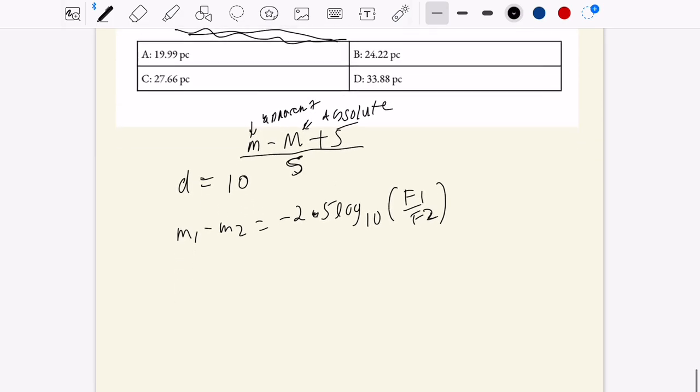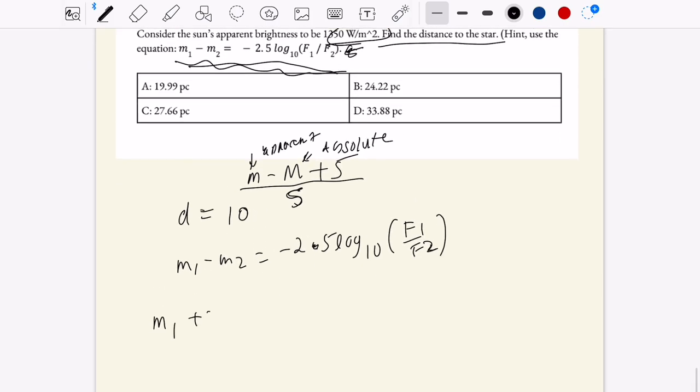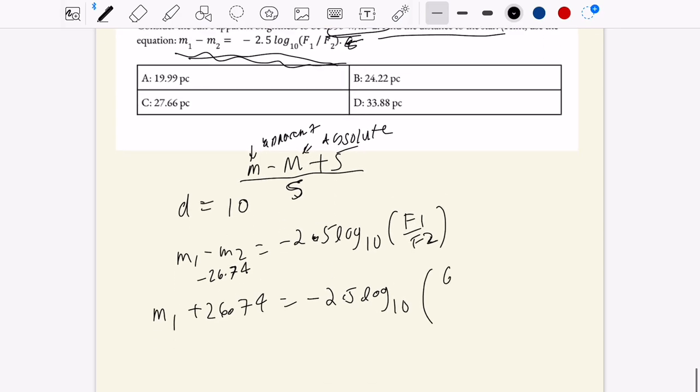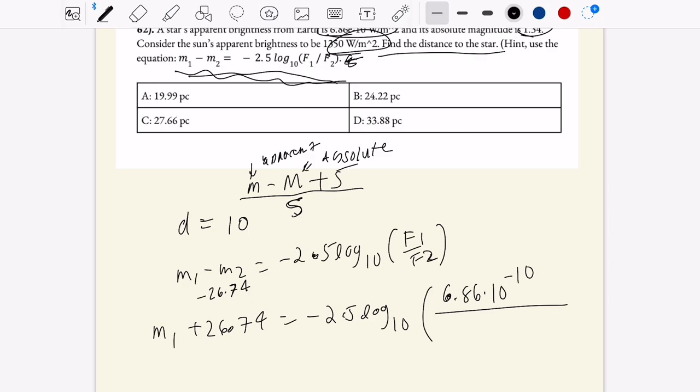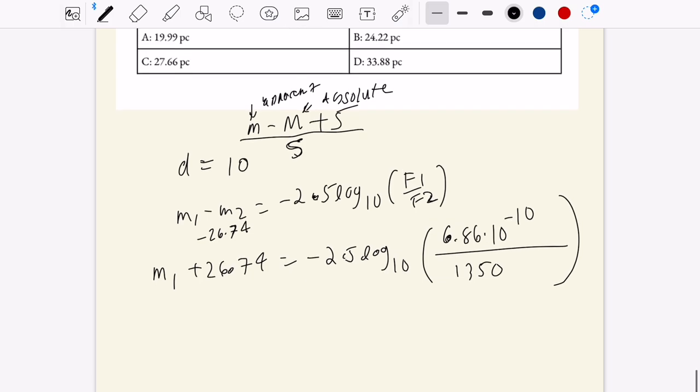So then we can write m1, the magnitude we're concerned with, is plus 26.74. That's doing a negative 26.74 right there. Just double negative equals negative 2.5 log 10. And now we need to do f1 over f2. So f1 is this value, 6.86 times 10 to the negative 10 watts over meter squared, the units cancel. And the denominator here is 1350. So doing this computation will yield us the apparent magnitude. And then minus 26.74. So then from this computation, you get m1 is about equal to 4.0.